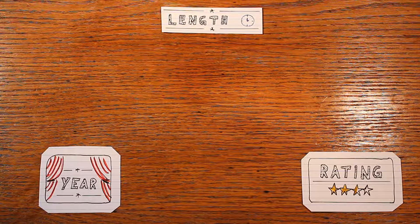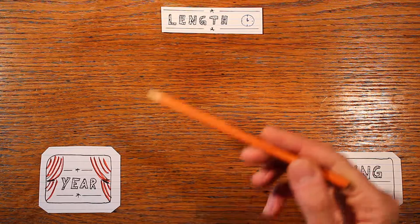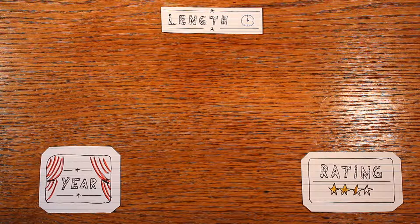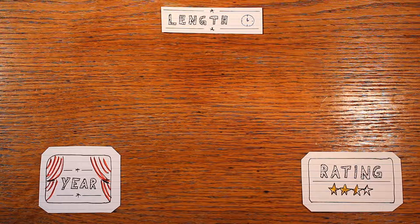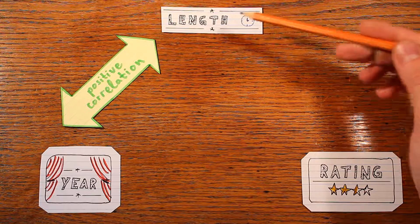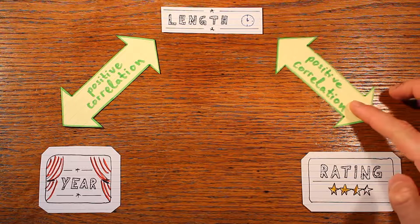Imagine that you're interested in the history of movies. You have a dataset that for a bunch of movies tells you when the movie was released, how long it runs in minutes, and a critic's rating. From your data you know there's a positive trend between the movie release year and the length — so newer movies tend to run longer. There's also a positive trend between length and rating, so longer movies tend to get better ratings.